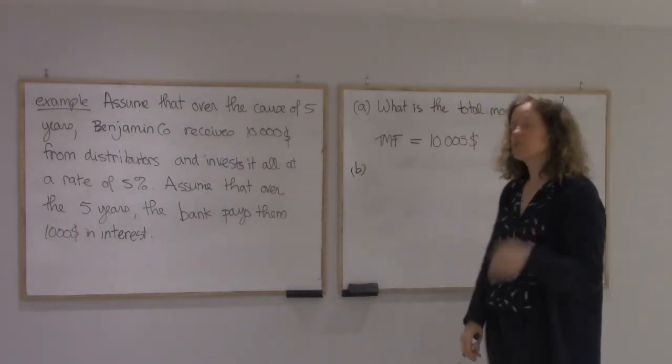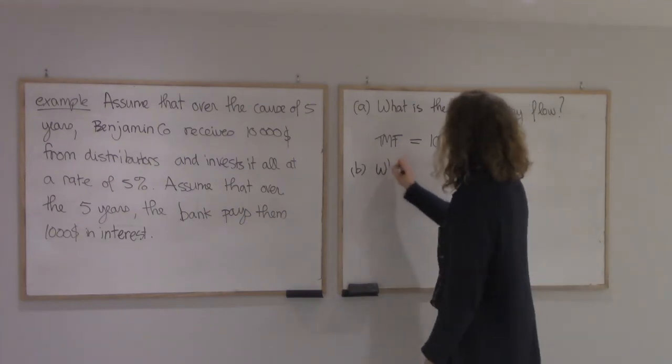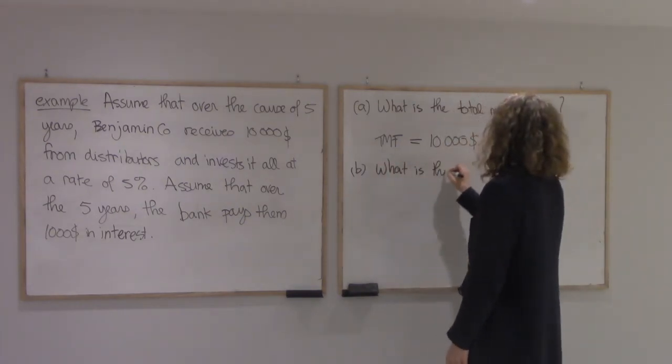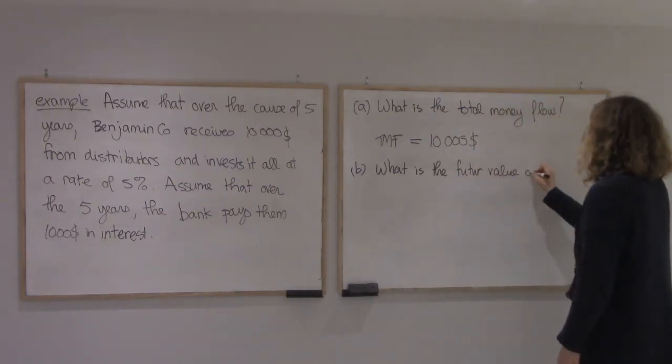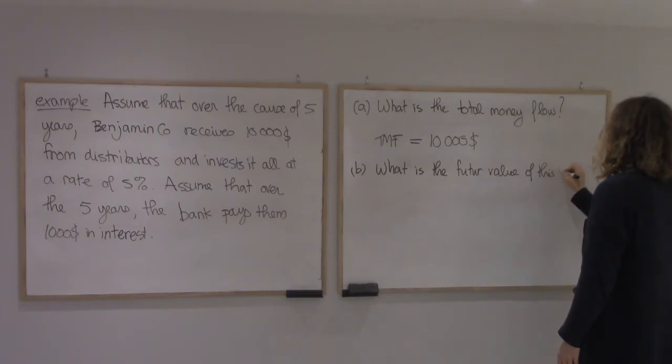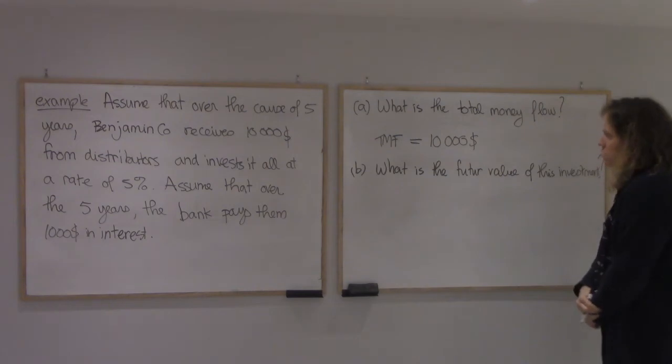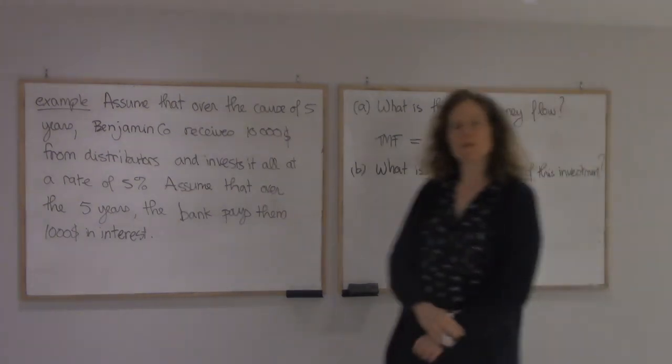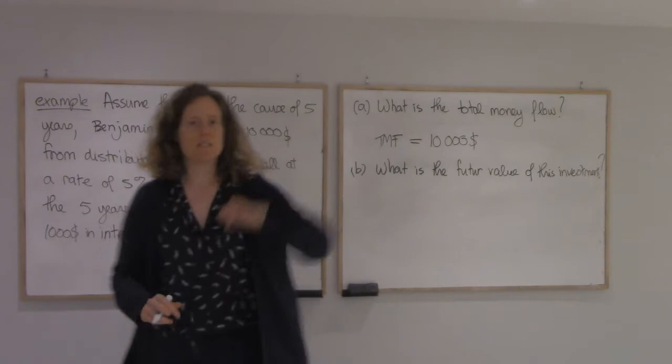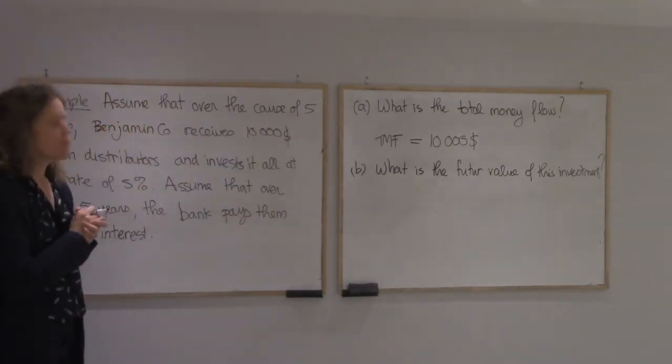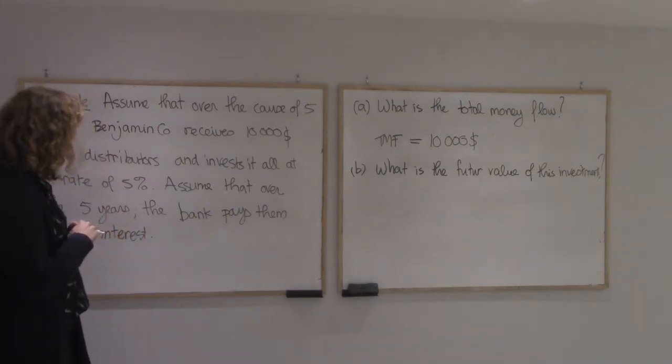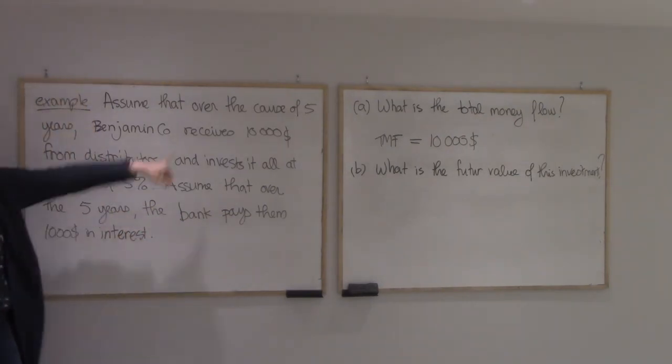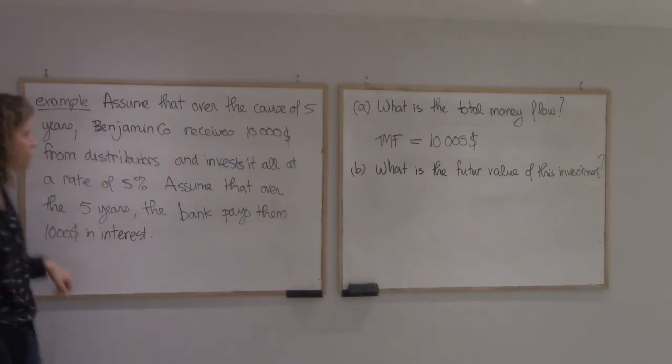Alright, and the next question, we want the future value. Future value means how much money they have in five years. Well, they still have the $10,000, that's their capital, but they also have all the interest that they're gaining. So in total they have $10,000 plus $1,000.